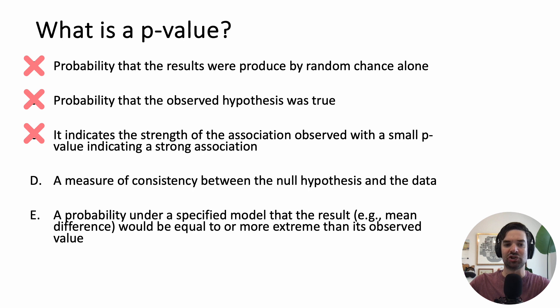A p-value is a measure of consistency between the null hypothesis and the observed data. True. A p-value is the probability under a specified model that the result, maybe the difference in blood pressure between two groups, would be equal to or more extreme than its observed value. True.